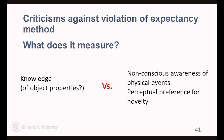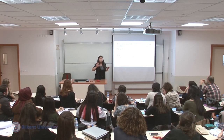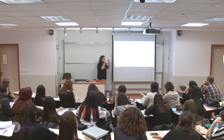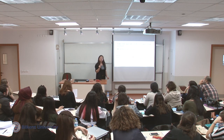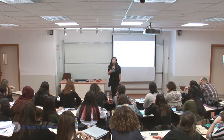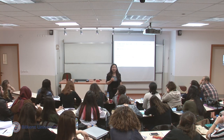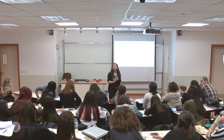Criticism against these violations of expectancy paradigms concerns the question of what they actually measure. We see infants looking longer at things — we infer that surprise means they had a prior expectation that wasn't fulfilled. But can we claim that this is knowledge? Just because someone is surprised and has an expectation, can we say that person has an in-depth understanding of a concept?